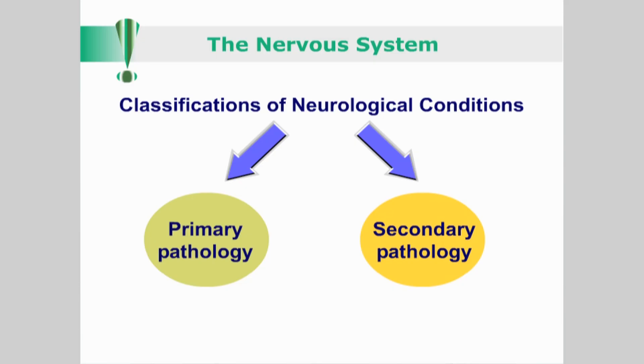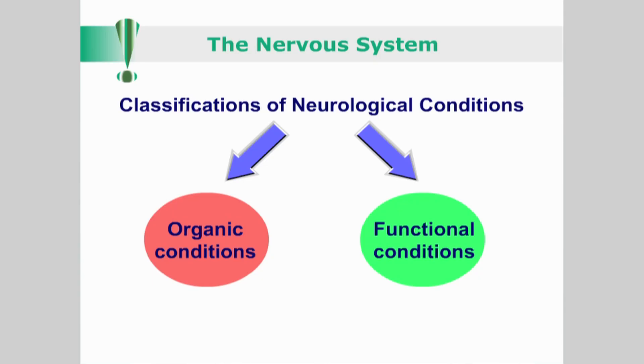When investigating a suspect neurological presentation, consider whether this is a primary neurological condition or secondary — for instance, from an endocrine or neoplastic pathology. Another useful way of classifying neurological conditions is to identify whether you are dealing with an organic or functional condition. However, in some cases, these boundaries may become blurred.